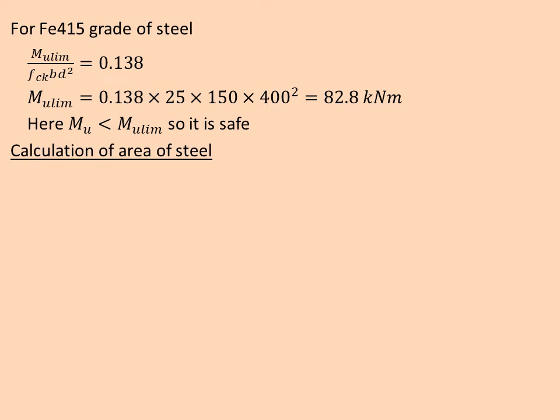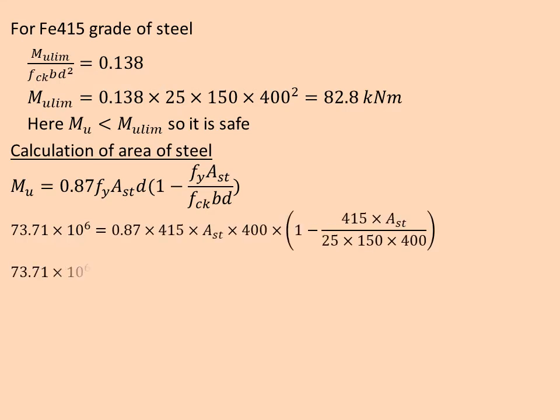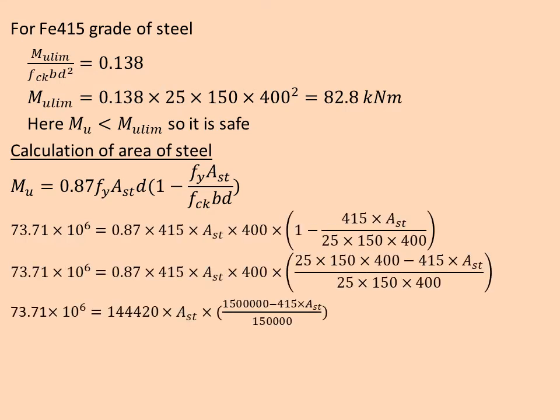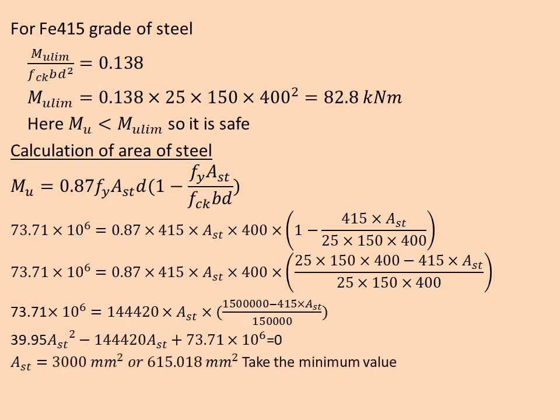After that we calculate the area of steel. Since it is an under-reinforced section, the formula for MU is 0.87·fy·Ast·d(1 - fy·Ast / fck·b·d). We substitute the values, we get a quadratic equation. Ast value is 3000 mm² or 615.018 mm². We take the minimum value. Ast required is equal to 615.018 mm².